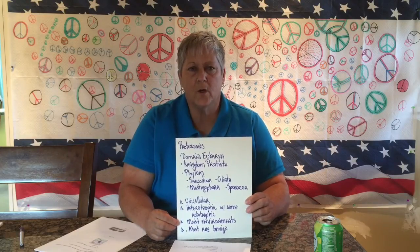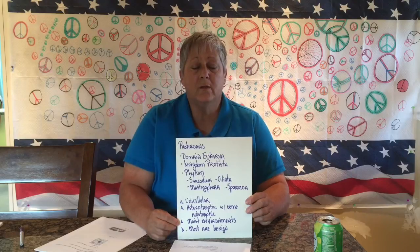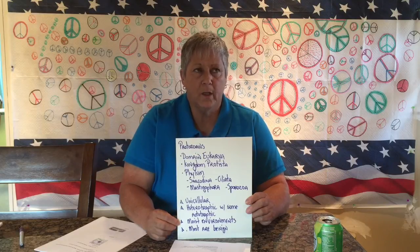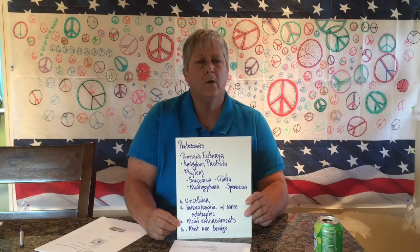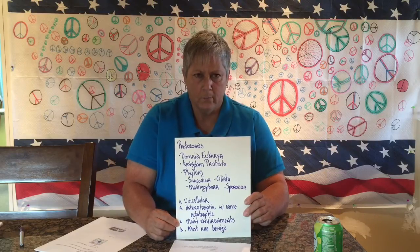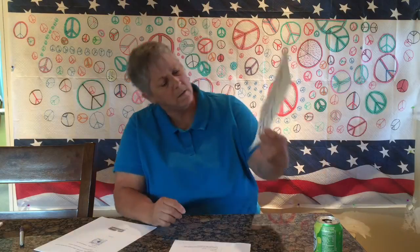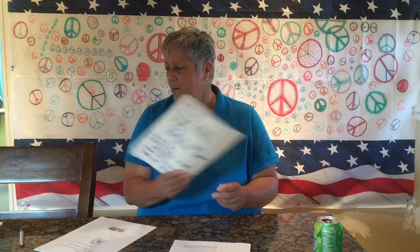A couple other general facts about the protozoans: they are unicellular and they are for the most part heterotrophic, meaning they are going to utilize preformed nutrients, with some members being autotrophic — meaning capable of photosynthesis. Some euglenas, for example, have the organelle called chloroplast and are capable of producing their own nutrients. They are primarily found living in moist environments — water, moist soil, or other areas. Mostly they're benign; we're concentrating on parasitic examples, but those are just a small percentage of all protozoans that exist.